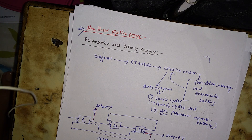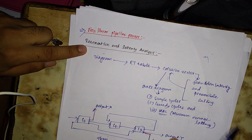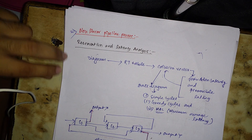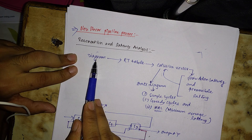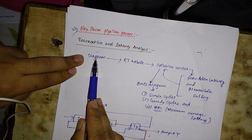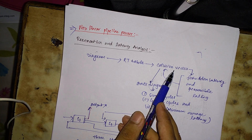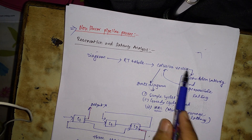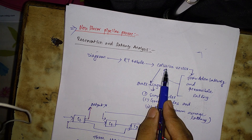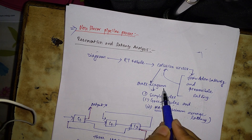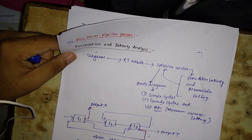Today we are going to study the concept of nonlinear pipeline processing, for which we have to learn reservation and latency analysis. Questions from this area are frequently asked. You may be given a stage diagram, from which you find the reservation table, then the collision vector, then the forbidden latency and permissible latency, and finally the state diagram to find simple cycles, greedy cycles, and minimum average latency.